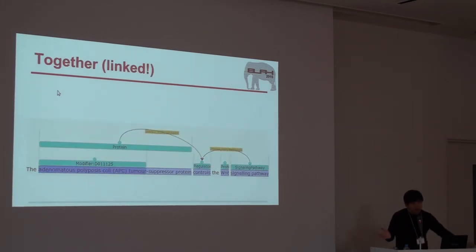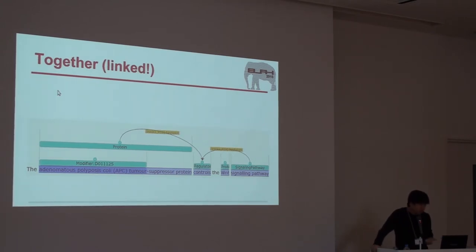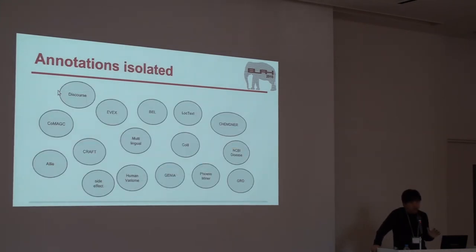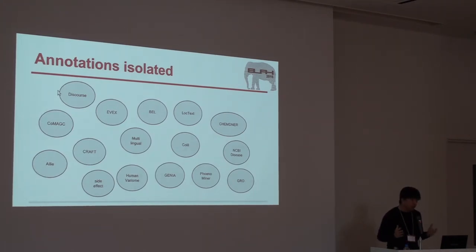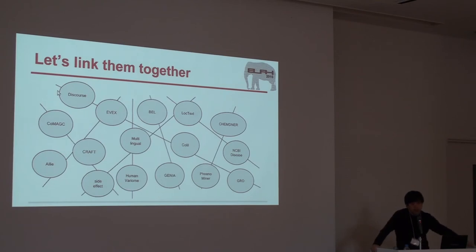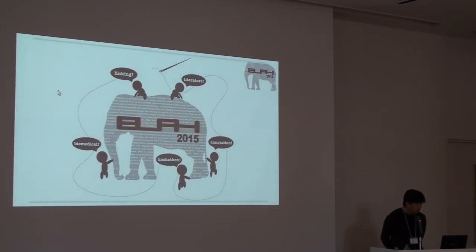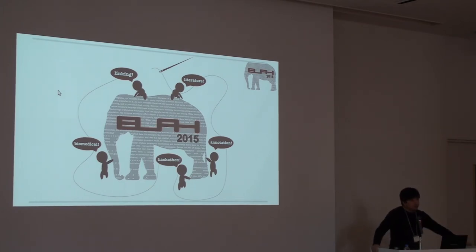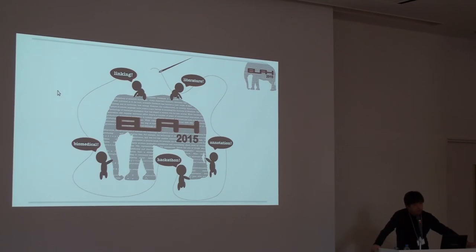If we can link them together, the information will become much richer. Our primary goal of this event is to recognize that all the important annotation datasets are now isolated, and to link them together. By linking all those isolated pieces of information, we believe we can figure out a big picture of science, life science, or life itself.